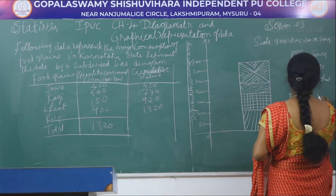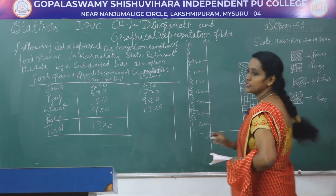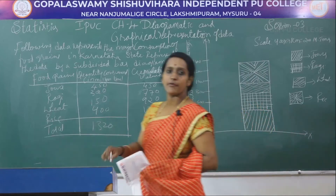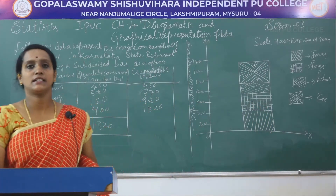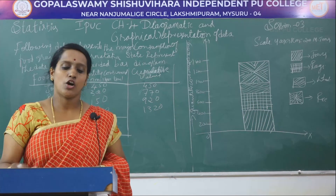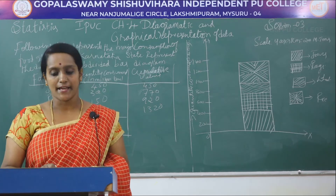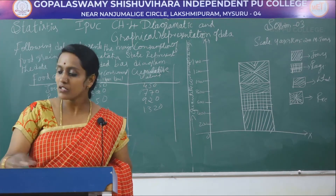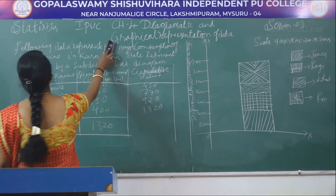The scale is: y-axis 1 centimeter is equal to 200 million tons. The index identifies jowar, ragi, wheat, and rice with different shapes. This is how we represent the given data in a subdivided or component bar diagram. Let us move on to another problem.